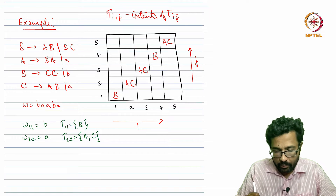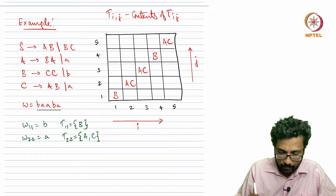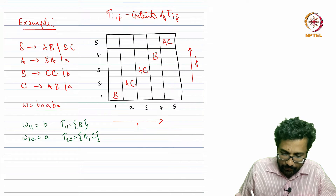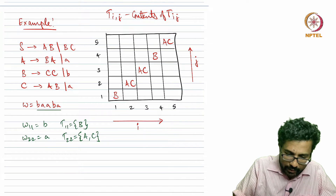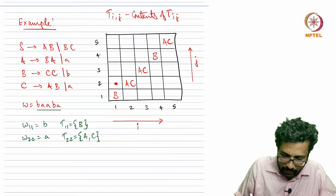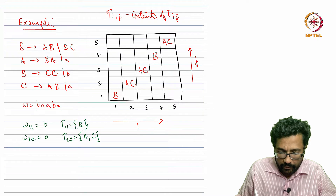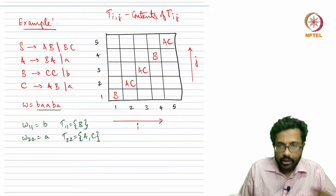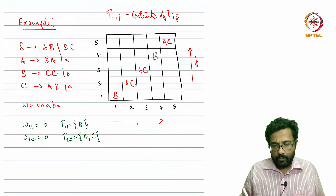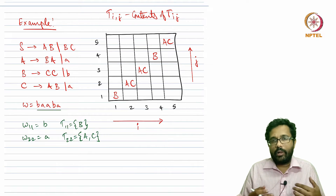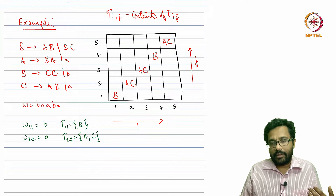Now let us move to substrings of length 2. First is T[1,2]. The only possible split for a length-2 substring is into T[1,1] and T[2,2].